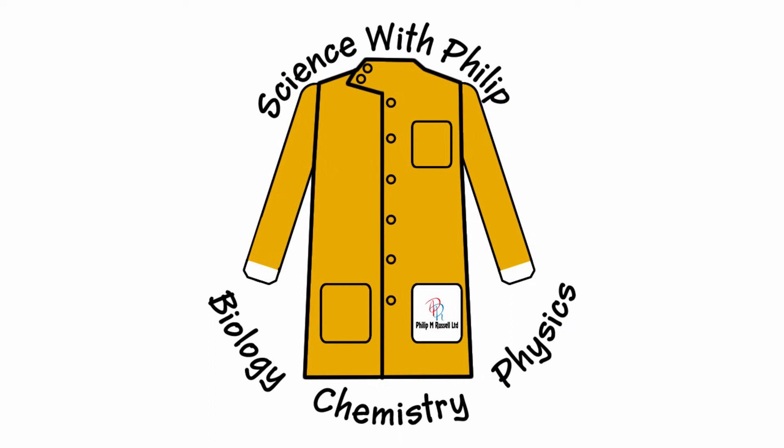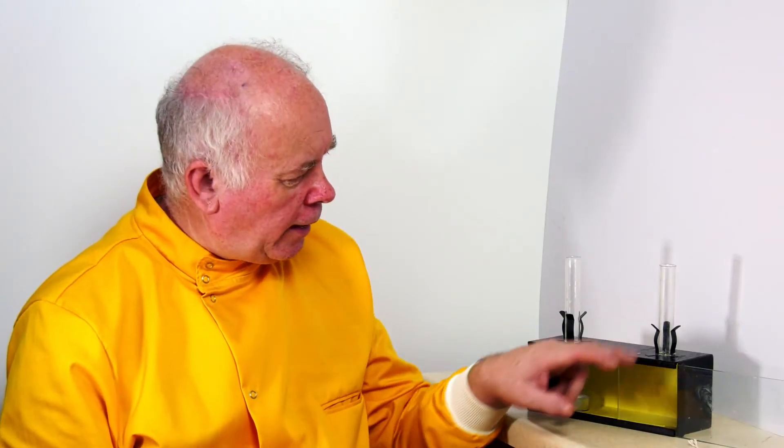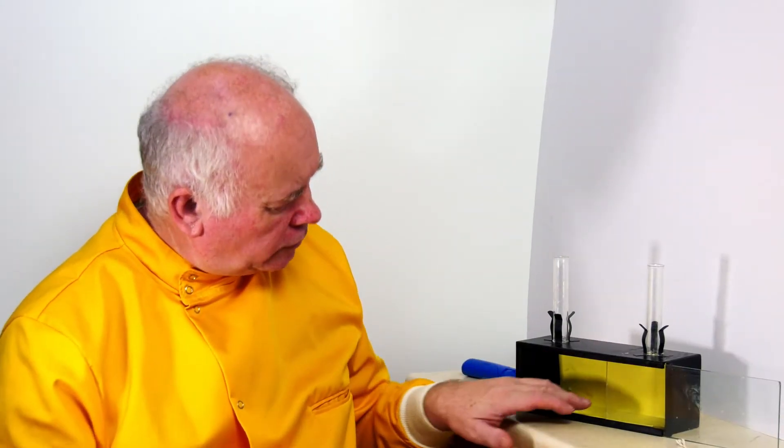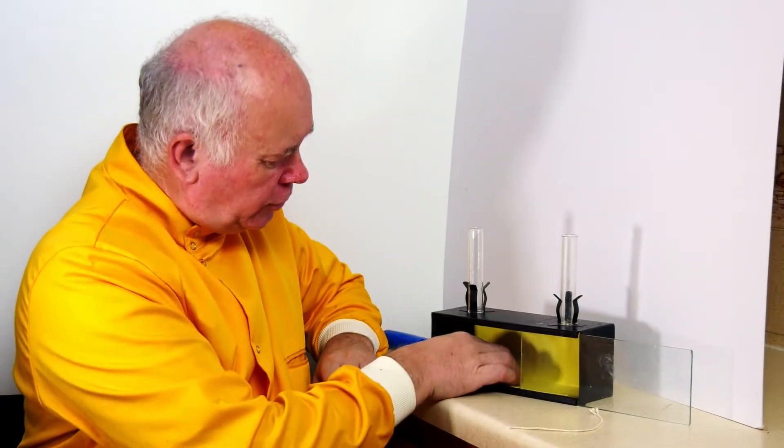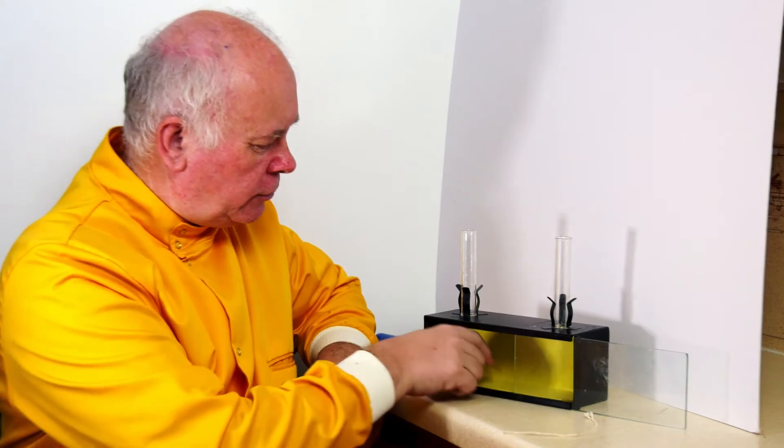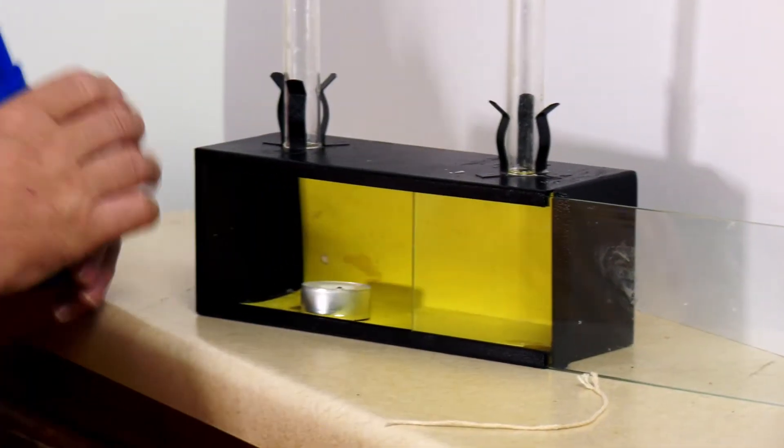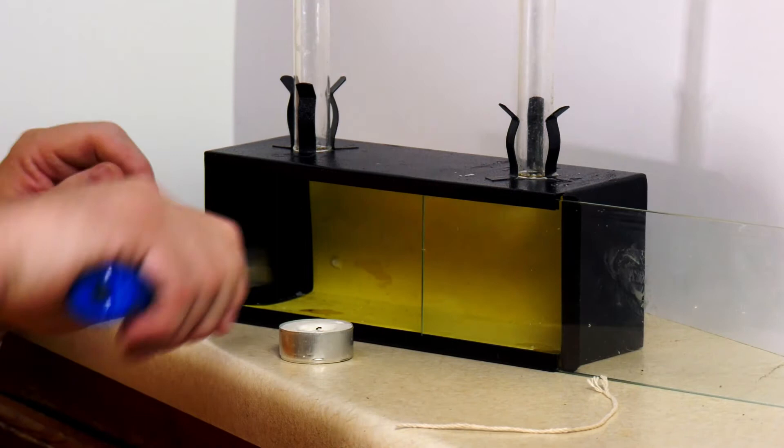This is a circulation of air apparatus. It consists of a little box with two glass chimneys. Under one of these glass chimneys I'm going to put a tea light and light it.